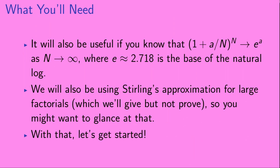There are also two other pieces of math that would be good to know going into this lecture. First, it would be useful to know that 1 plus a over n, all raised to the n power, goes to e to the a in the limit that n goes to infinity, where e is the base of the natural logarithm, approximately 2.718. Also, we will be using Stirling's approximation for large factorials — we'll give that approximation but won't prove it, so you might want to take a glance at that as well.